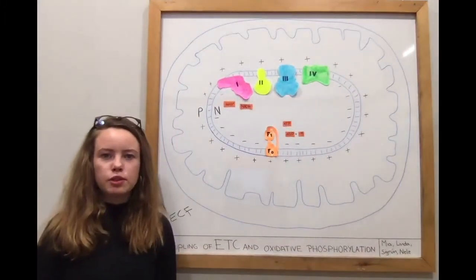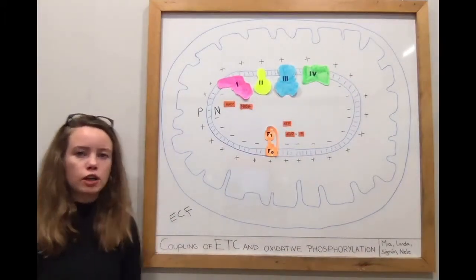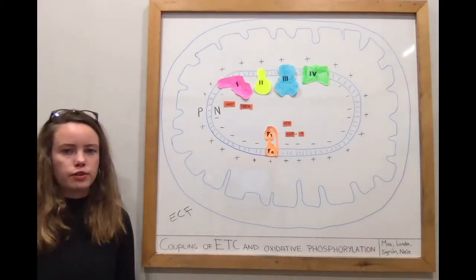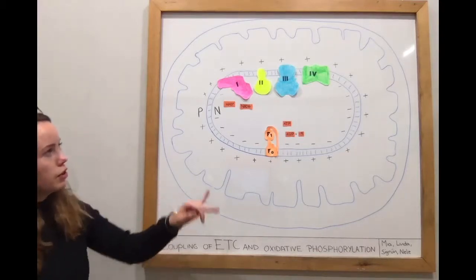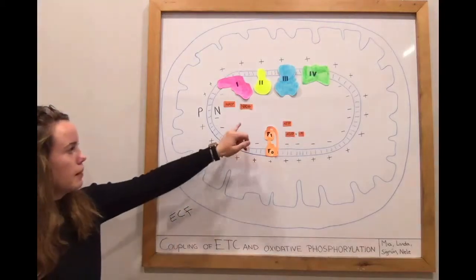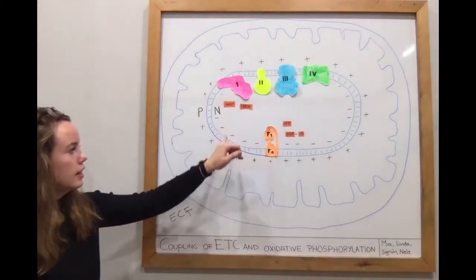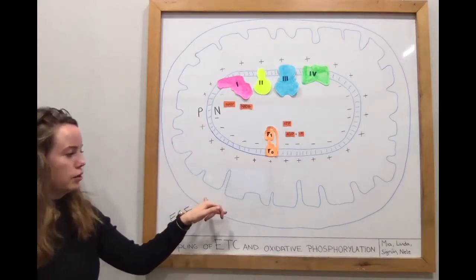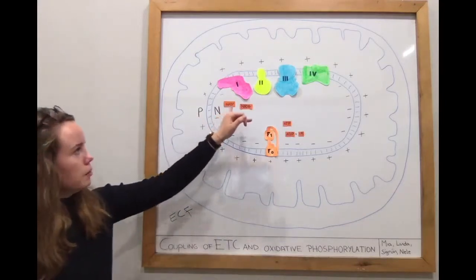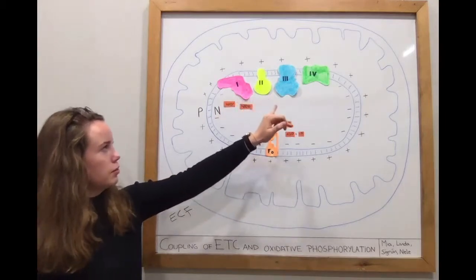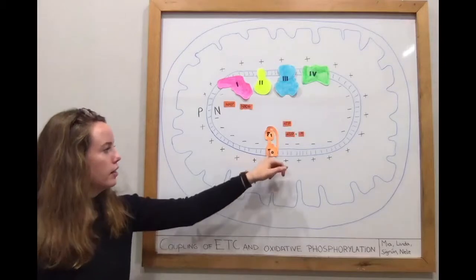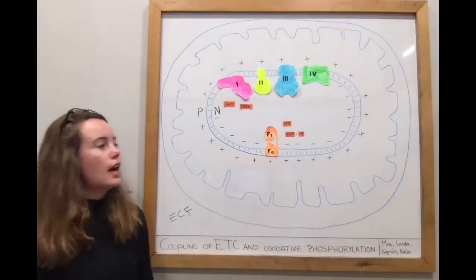Hey guys, welcome to a new biochemistry lesson. Today we'll talk about coupling of the electron transfer chain and oxidative phosphorylation. We have drawn for you mitochondria here with the matrix (also called the inside), the inner membrane, the intermembrane space (also called the P-side), and the outer membrane. The complexes that you can see here from one to four are part of the electron transfer chain, and this orange one down here is the ATP synthase.